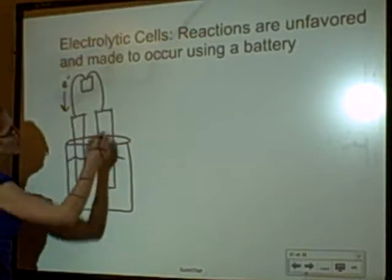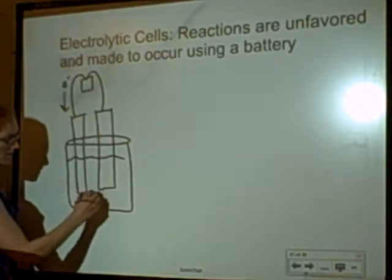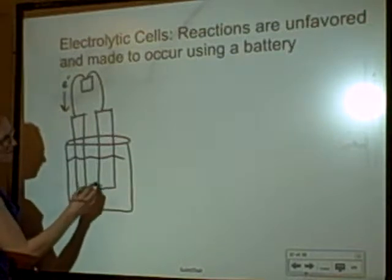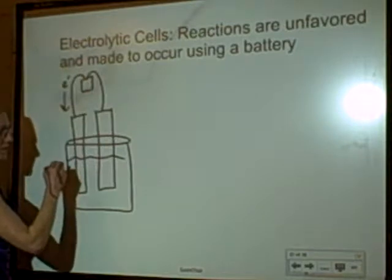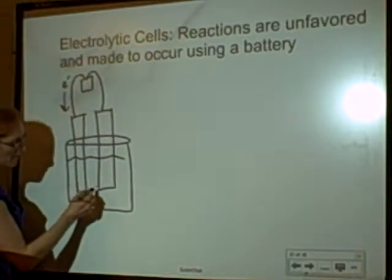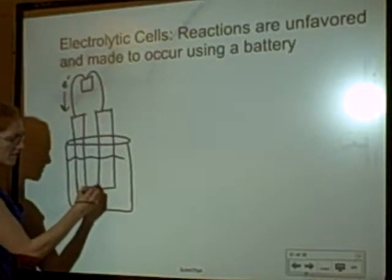And then to complete the circuit, because I have positive things leaving here, I'm going to need some positive going in. So now some electrons are leaving this metal, being taken up and pumped on over. I'm going to have electrons leaving this, so it's going to be turning this into positive ions.